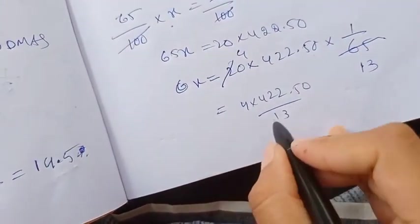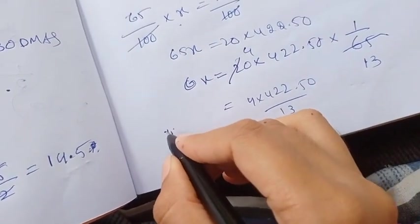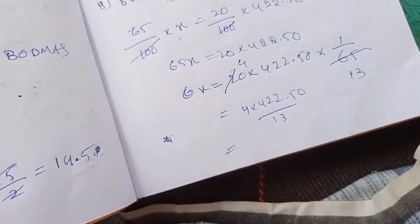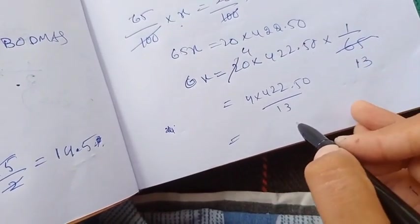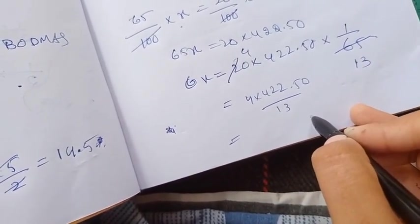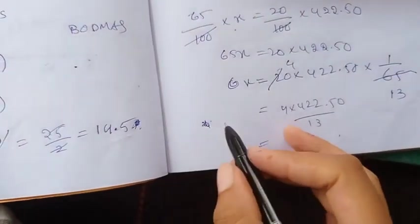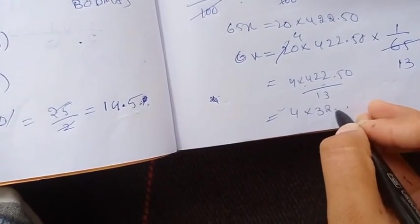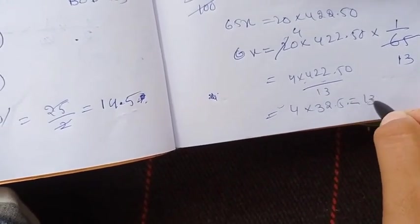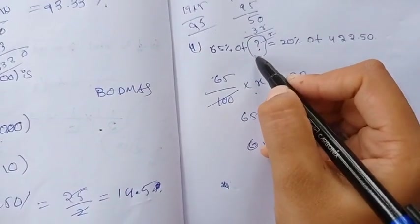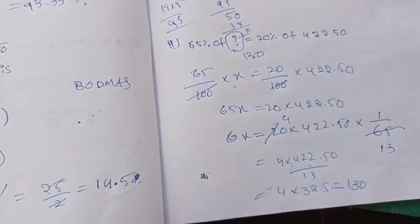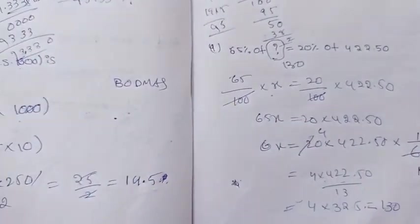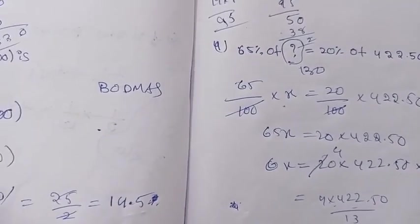42,250 divided by 13 equals 3,250. Then 4 times 3,250 equals 13,000. So the value of the question mark is 13,000. Next, thank you for watching. Do subscribe to my channel.